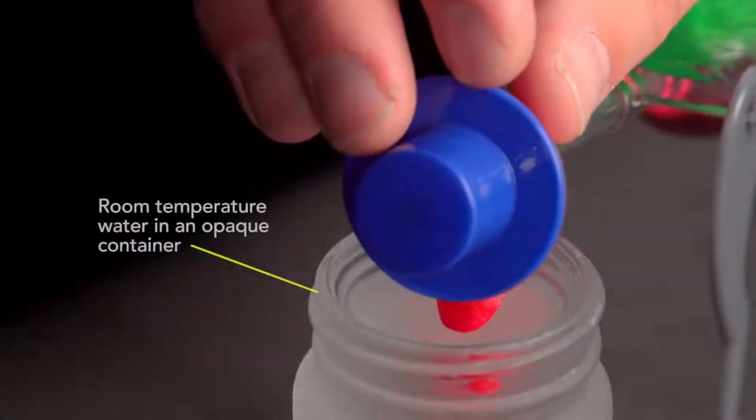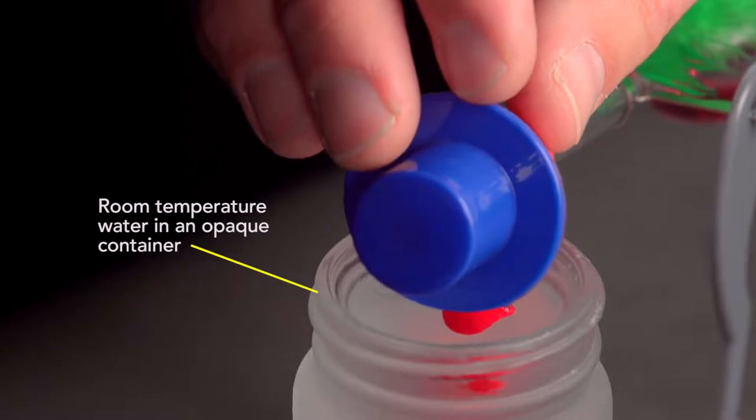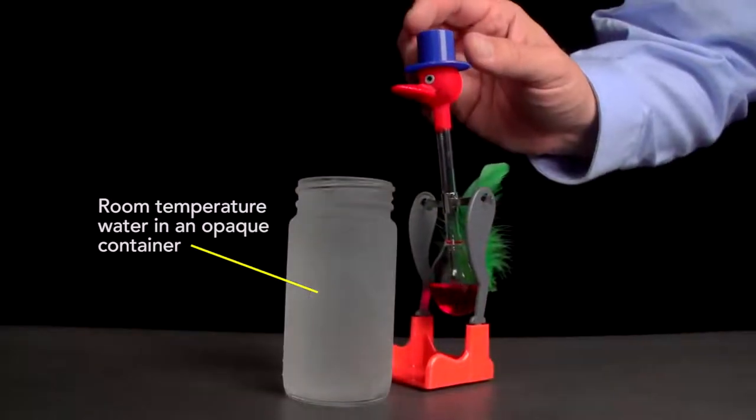Wet the bird's beak thoroughly with room temperature water. The opaque container makes it look chilled, but it isn't. Then stand it upright.